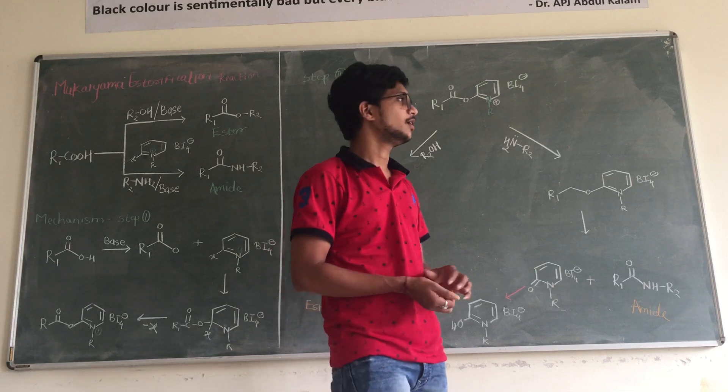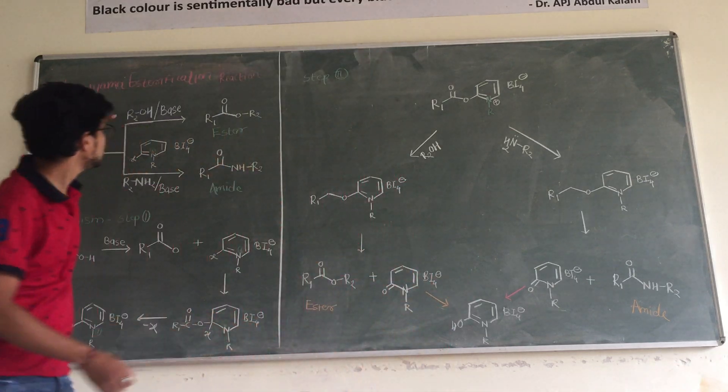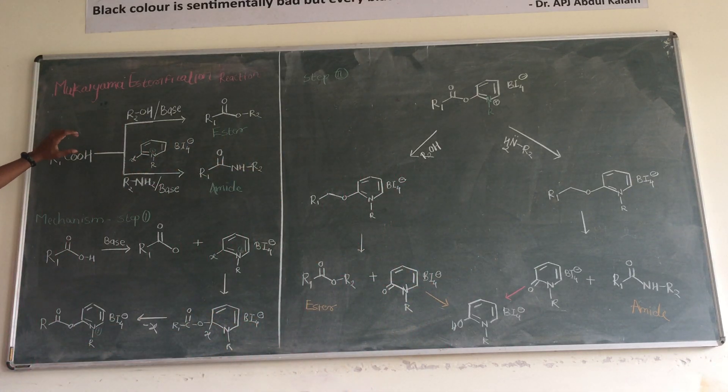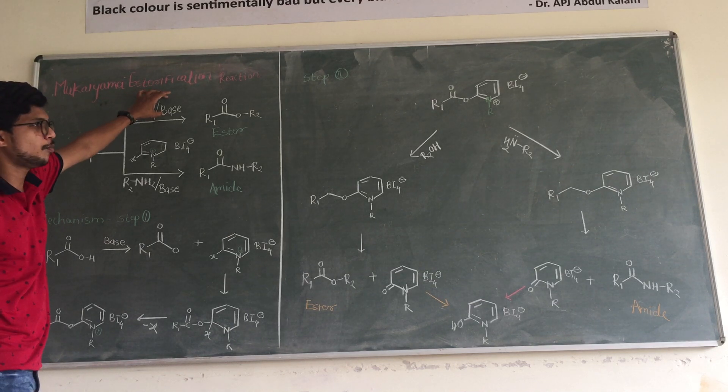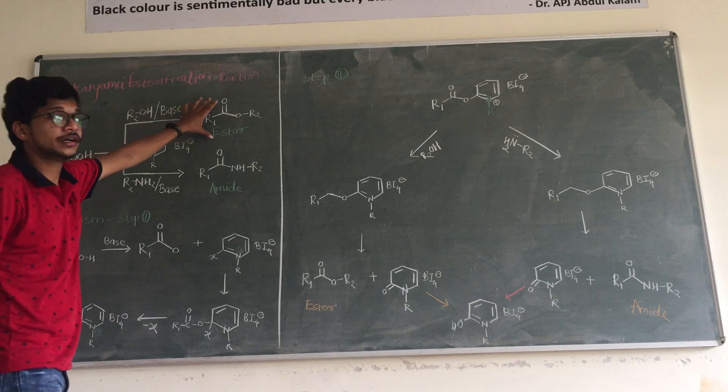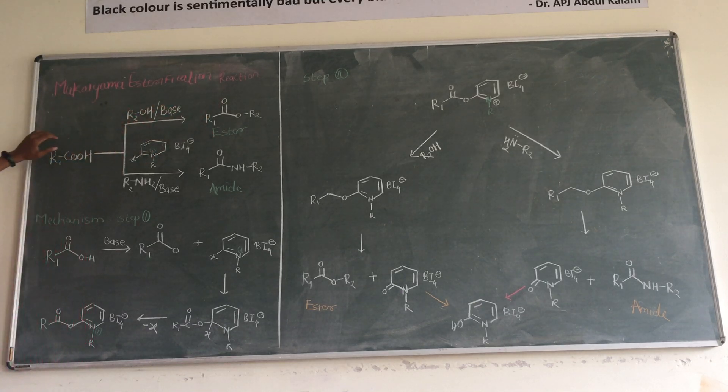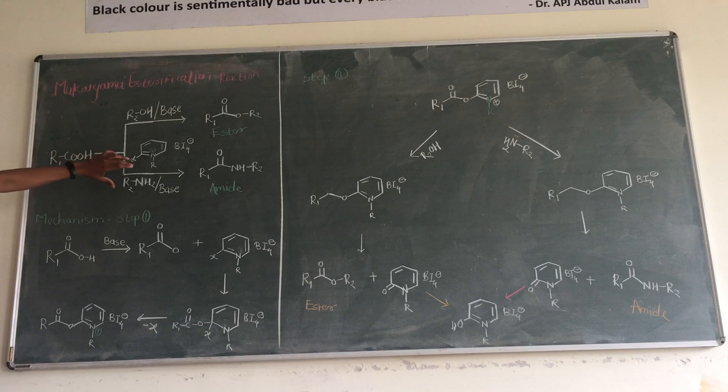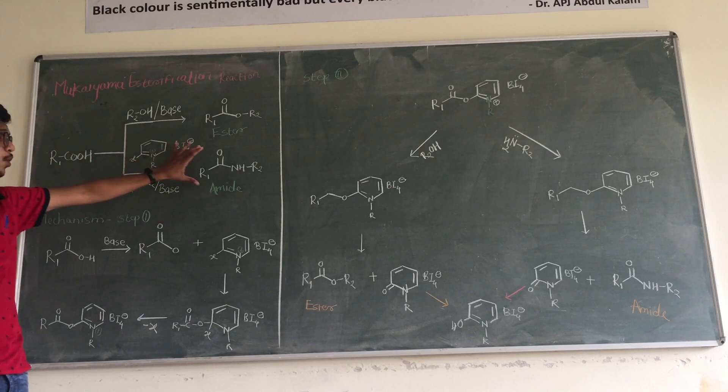In this video we will see Mukaiyama esterification reaction. In this case, when the acid is reacted with alcohol in presence of base and Mukaiyama reagent we will obtain product as an ester. And when acid is reacted with amine in presence of base and Mukaiyama reagent we get product as an amide.